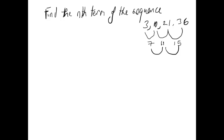We can see that the first difference is 7 here, 11 here — so between 3 and 10 you get 7, between 10 and 21 you get 11. And the first difference here is 15. So the first differences are not constant, meaning it's not a linear sequence. Let's check if the second differences are constant: the difference between 7 and 11 is 4, and the difference between 11 and 15 is 4. So yes, it is a quadratic sequence.